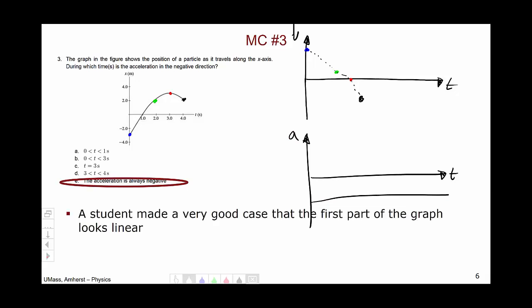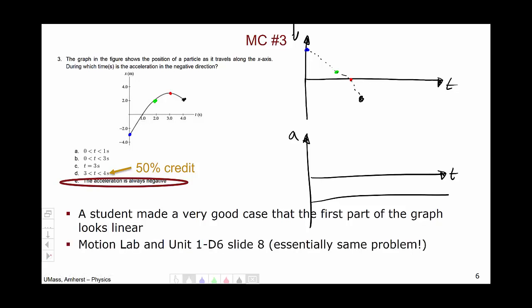However, a student made a very good case that the first part of this particular graph does look somewhat linear, and as such I'm going to give 50% credit for choice D. The motion lab, as well as the sixth day of unit one, in particular slide eight—which was essentially the same problem—should have prepared you for this question.